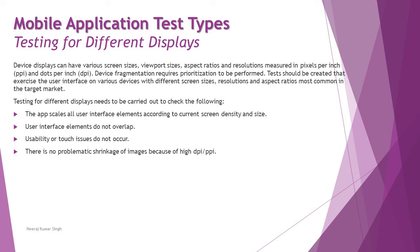Testing for different displays needs to check the following: that the app scales all user interface elements according to the current screen density and size; that user interface elements do not overlap — when shrink-fitting the app to a smaller screen, text may overlap and become inaccessible; that usability or touch issues do not occur; and that there is no problematic shrinkage of images due to high DPI or PPI, since resolution can reduce on images when fitting to a smaller screen.